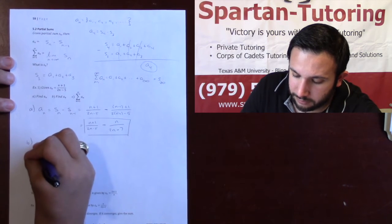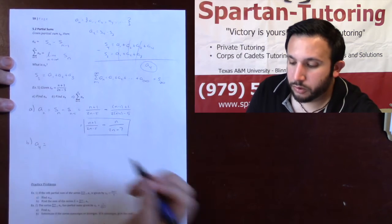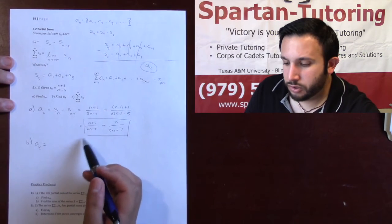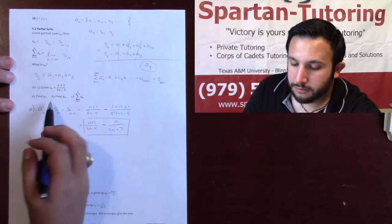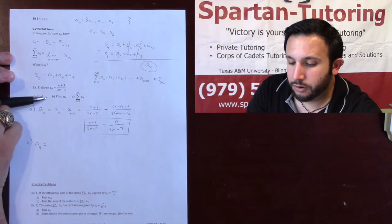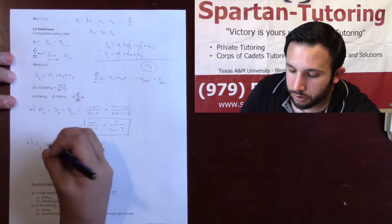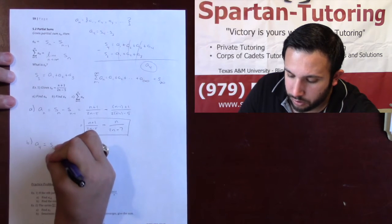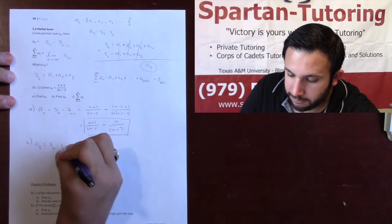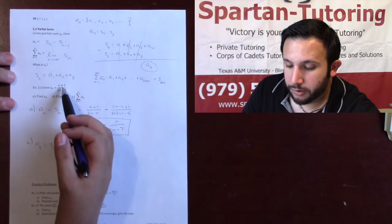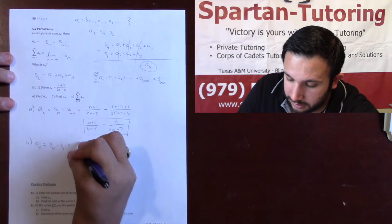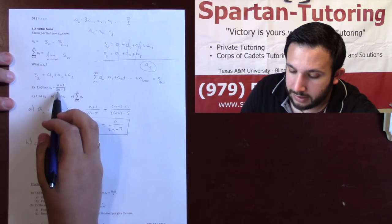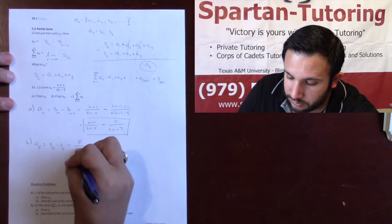Part B, if I want A4, you have one of two options. Now that I have An, you can just plug a 4 into here if you want. Or, if they didn't ask you to find part A first, you can just find A4 by doing S4 minus S3. S4 is what I get when I plug 4 into every n. So here, 4 plus 1, that's 5, over 8 minus 5, that's 3.